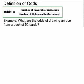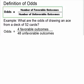Let's look at an example. What are the odds of drawing an ace from a deck of 52 cards? Using the definition, we have 4 favorable outcomes because there are 4 aces in a deck of cards, and that leaves 48 cards that are not aces, so we have 48 unfavorable outcomes. So our odds are equal to the ratio 4 over 48.